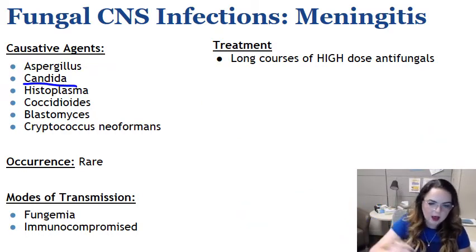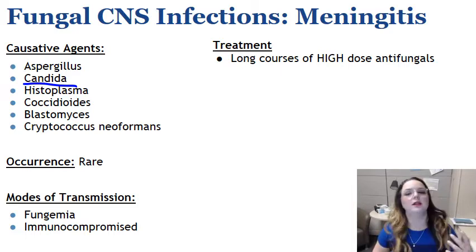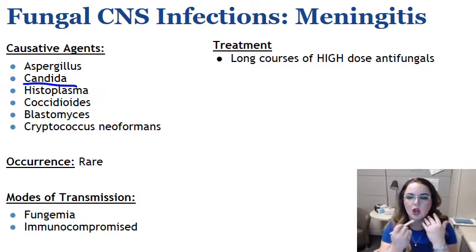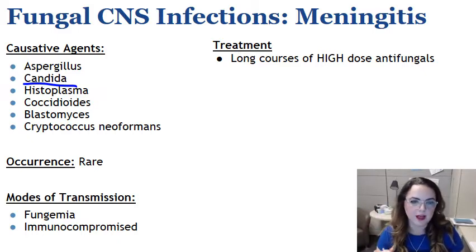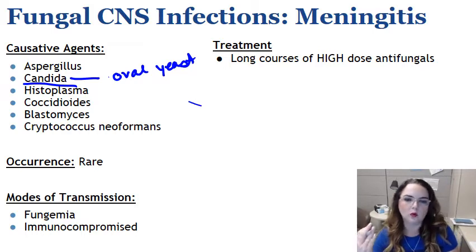Candida is a really common fungal infection seen in all sorts of different body sites — often associated with yeast infections in women, oral thrush in HIV patients, and also in nursing infants where transmission can occur back and forth from mother to infant. It presents as an oval yeast form and is one of the most important groups of opportunistic pathogens, found all over the world. About 25 to 50% of humans are actually carriers of it.